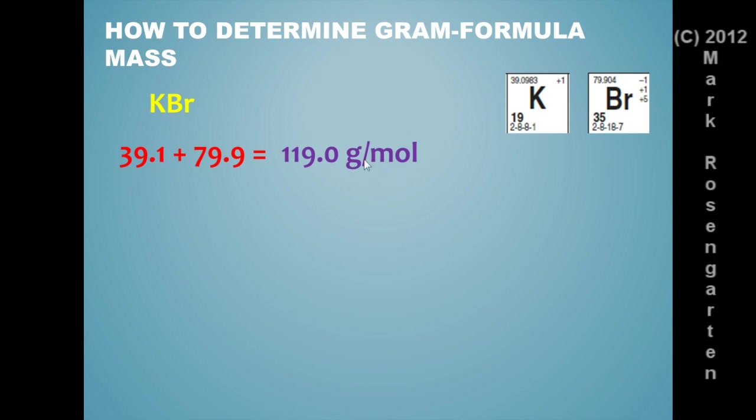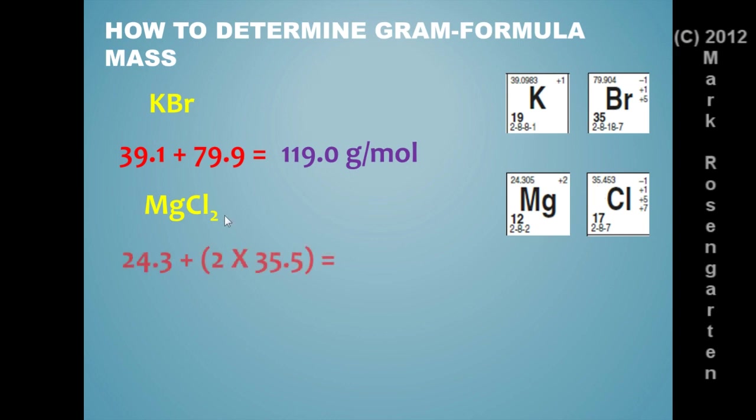So every mole weighs this many grams. Now magnesium chloride is just slightly more complicated because there's two chlorines in the formula. So magnesium weighs 24.3 for each magnesium. And there's only one of them. Chlorine weighs 35.45, which rounds to 35.5 for chlorine. But there's two of them. So you've got to take that into consideration. So that's 24.3 for the magnesium, two times 35.5 for the two chlorines. And that gives you your formula mass in grams per mole. Now remember that because we're going to be using that in a little bit. 95.3 grams per mole.